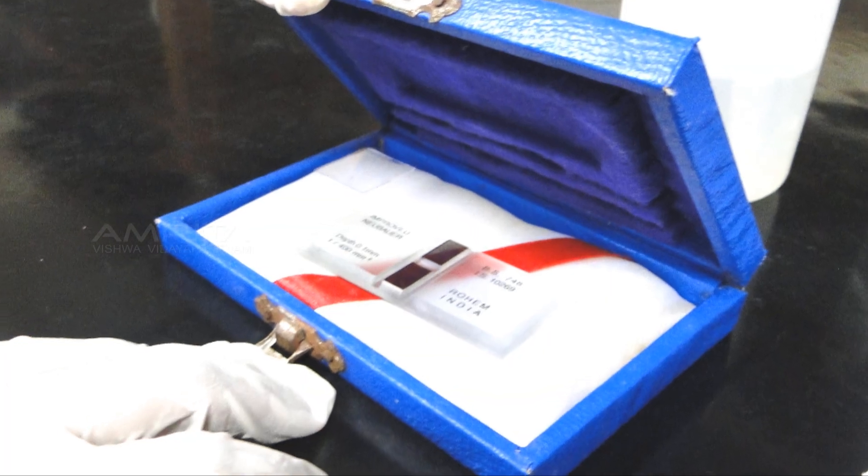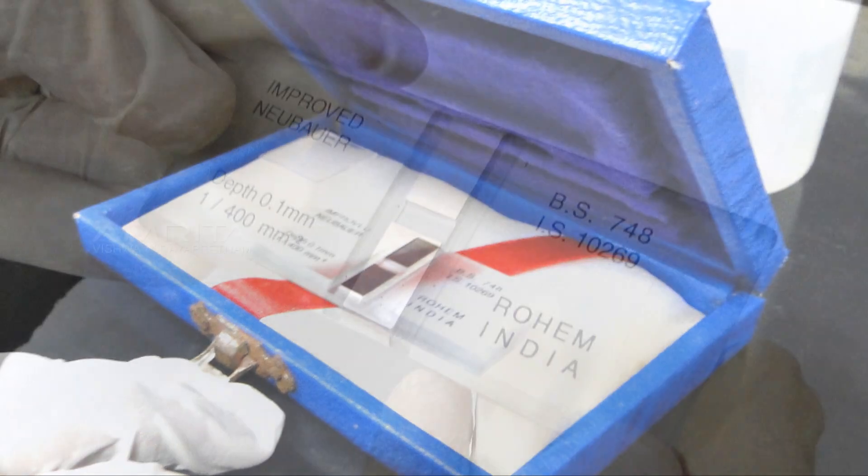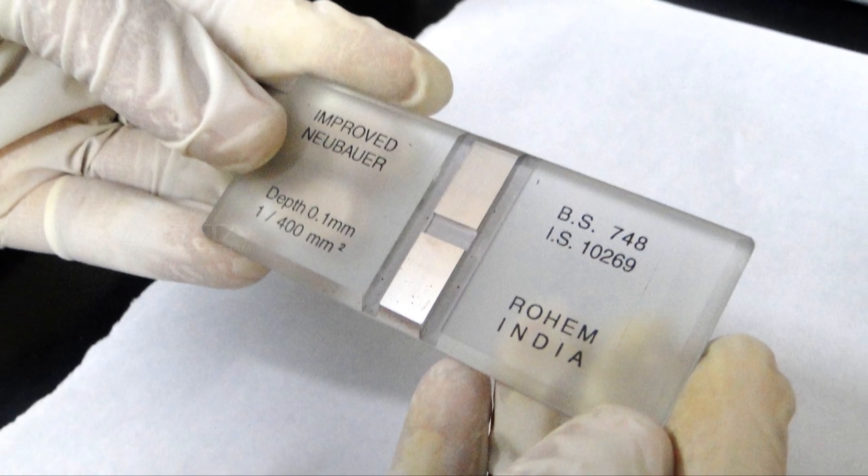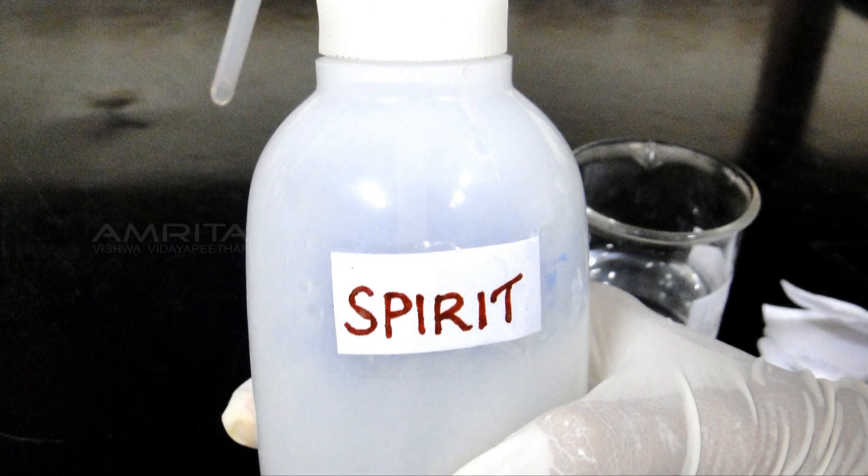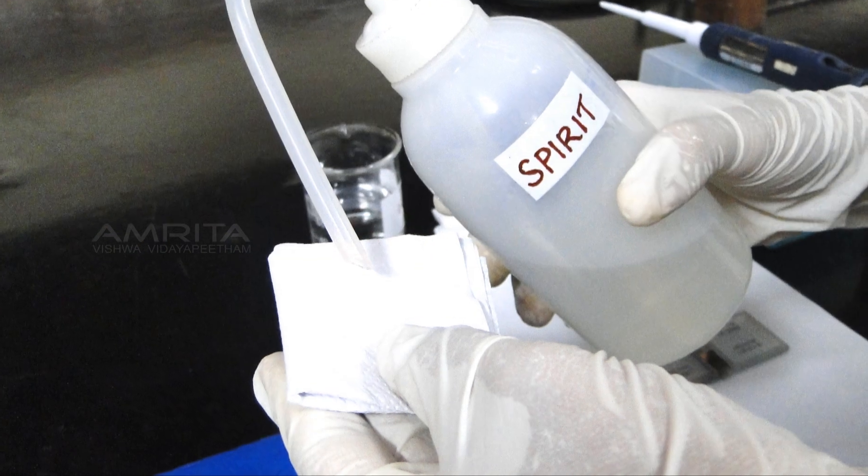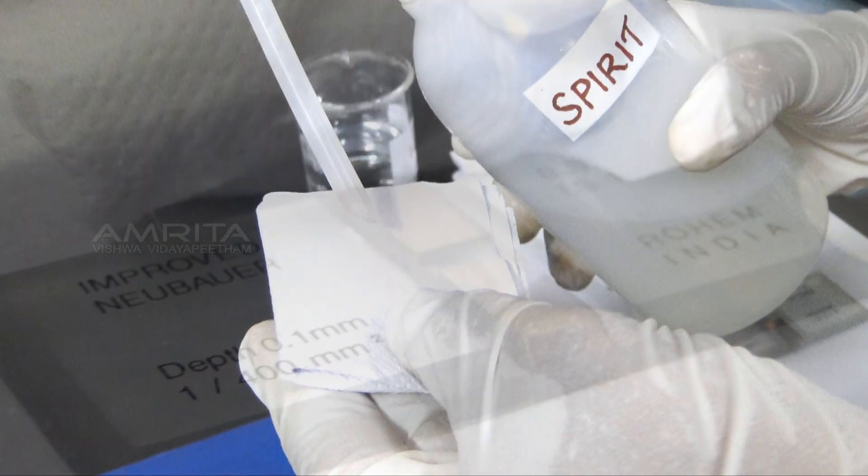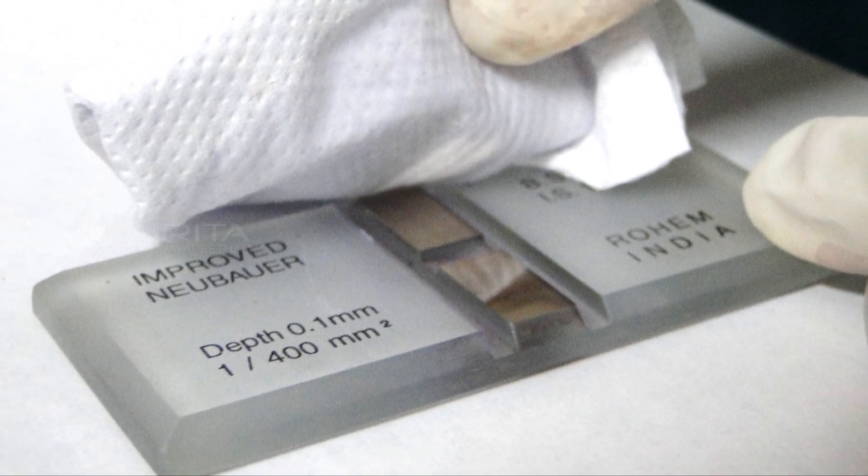Procedure: Take the box containing hemocytometer, open it, take the hemocytometer and place it on a white paper. Take a tissue paper, apply a small quantity of spirit on the tissue paper, and wipe the surface of the hemocytometer.